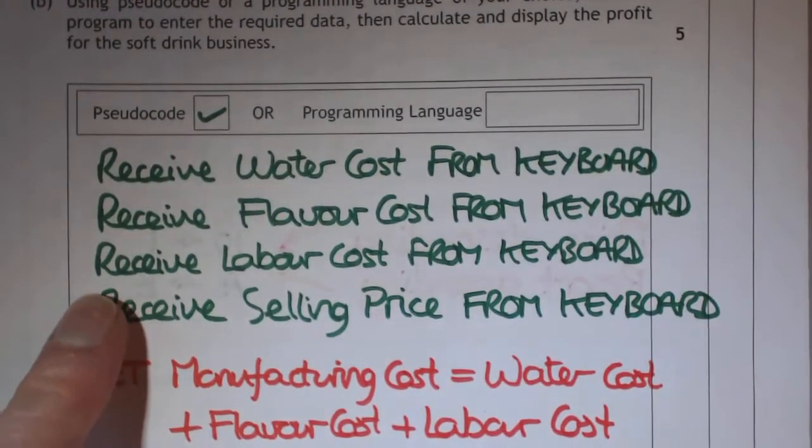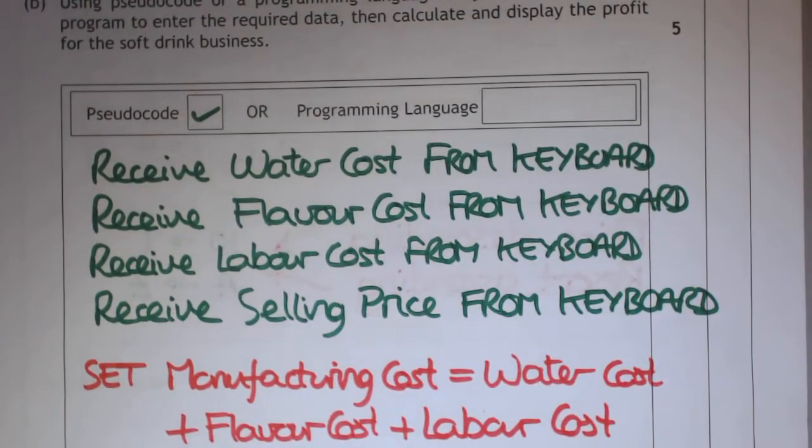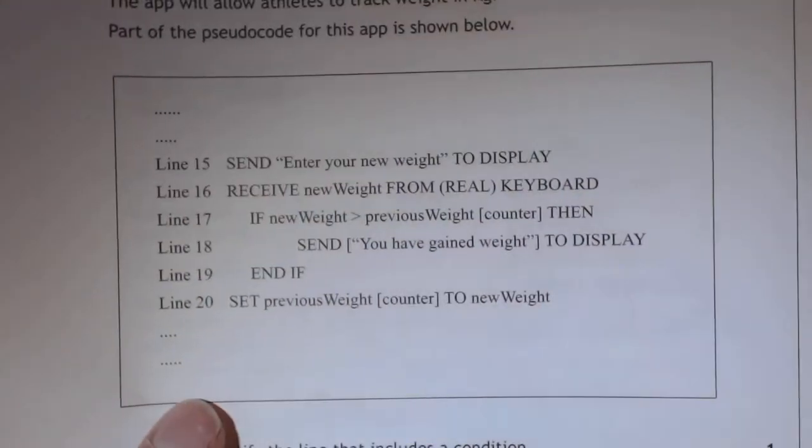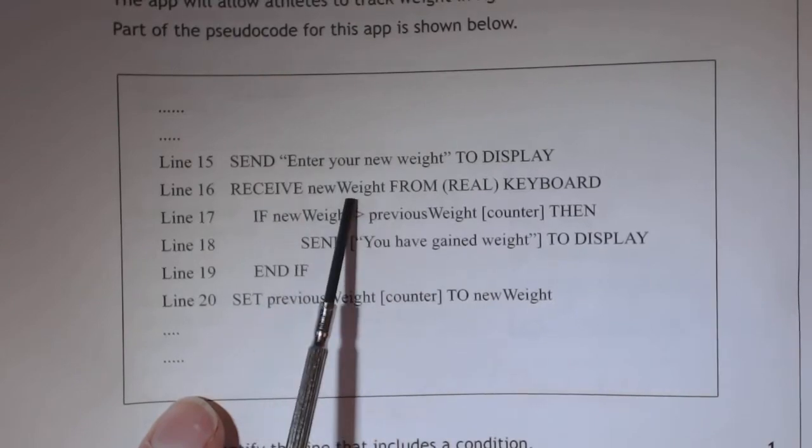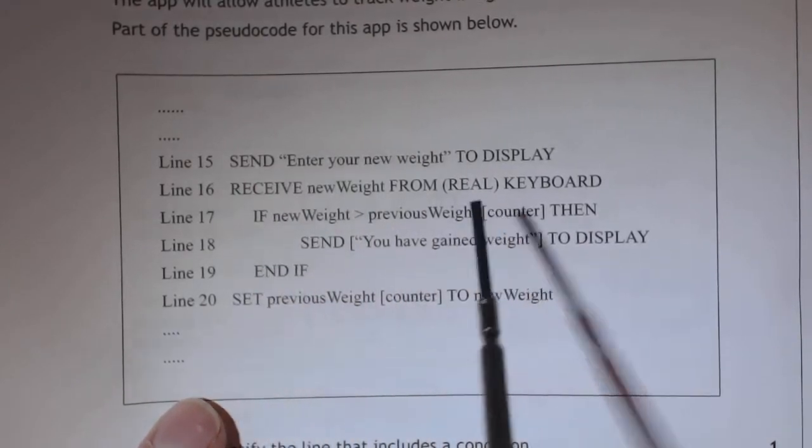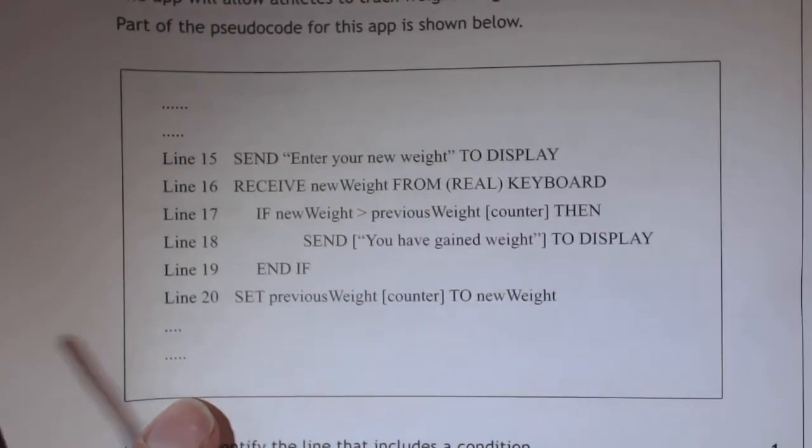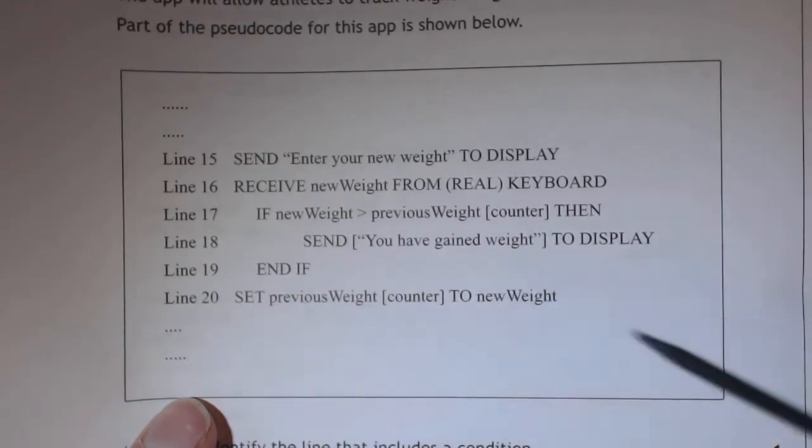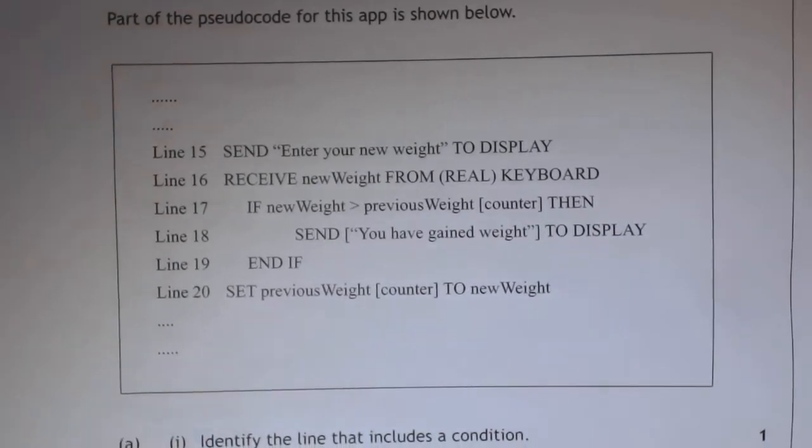So you might be sitting there thinking, what do I write to actually get information from a keyboard into my variable? If you have a look, then you might be thinking, oh right, I forgot about that. So this is a tip that you could maybe have a quick look through your question paper, and some questions might help you answer other questions.